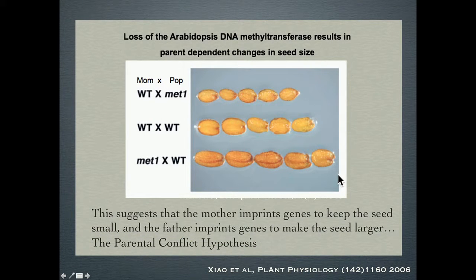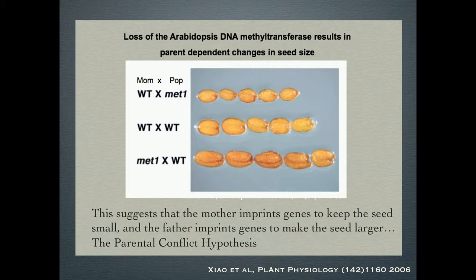Rod Scott's group was one of the first to show this with antisense lines. This is a figure from Bob Fisher's group using a point mutant. We've shown this with heterozygous knockout alleles. The idea is: if I've lost DNA methyltransferase ability, I can't methylate DNA, I can't establish an imprint on a gene. So I take those mutants and if I cross them as a father, the resulting seeds are very, very small. If I take that same mutation and cross it as a mother, now the seeds are very, very big.